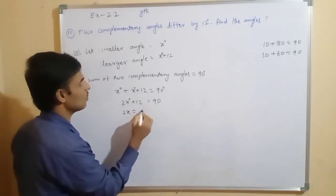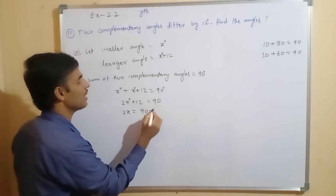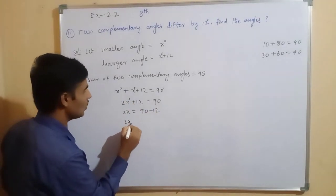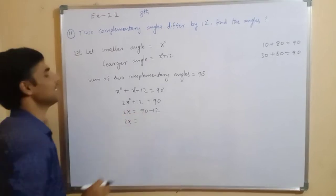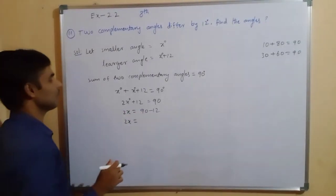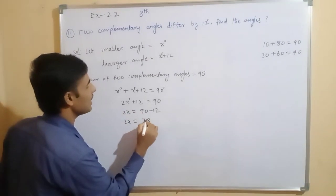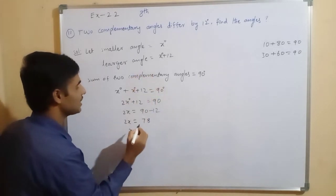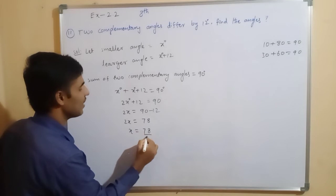Okay, now, 2x equal to 90, plus 12 become minus 12. Now, 2x equal to 90 minus 12, 90 minus 12, 78. Now, here, 2 there, you transpose to the side, x equal to 78 divided by 2.